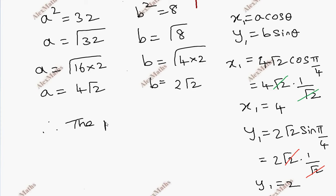Therefore the point is (x₁, y₁) = (4, 2).